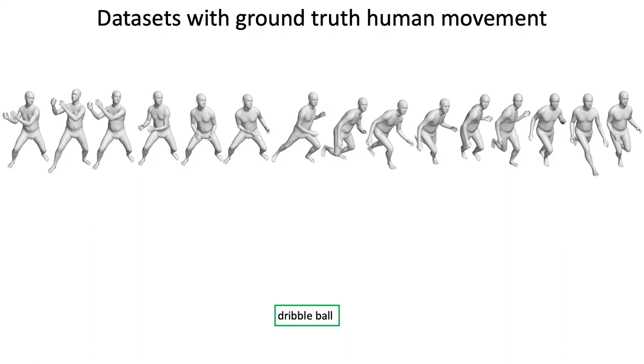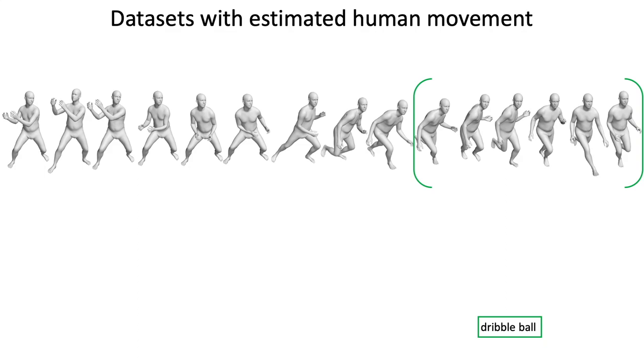However, existing motion capture datasets describe an entire movement sequence with just a single action label. Other datasets with noisy estimates of human skeleton only label a short cropped segment from a longer sequence.